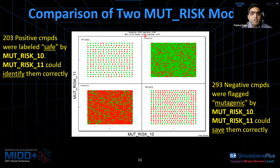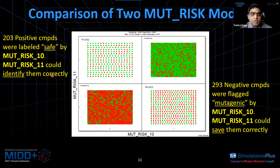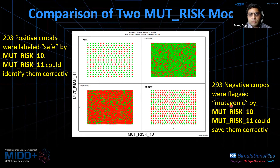Comparing the two models, 203 positive compounds that were labeled safe by MuteRisk 10 are now identified correctly by MuteRisk 11. Similarly, around 300 negative compounds that were incorrectly flagged as mutagenic by MuteRisk 10 are now saved with our new rules.